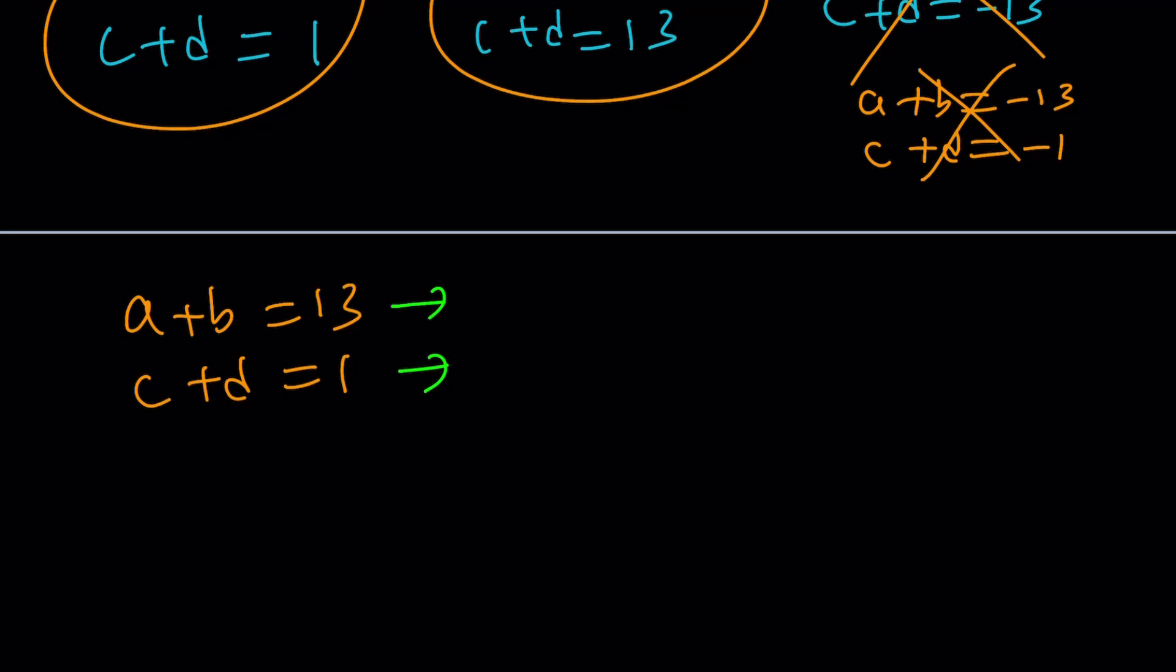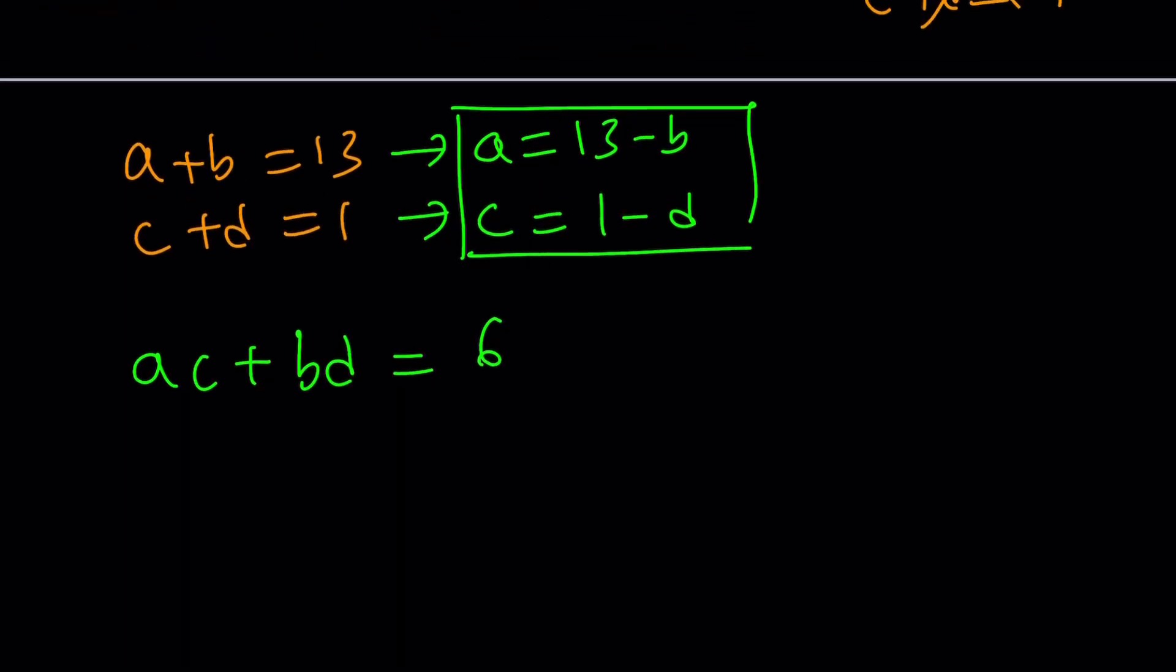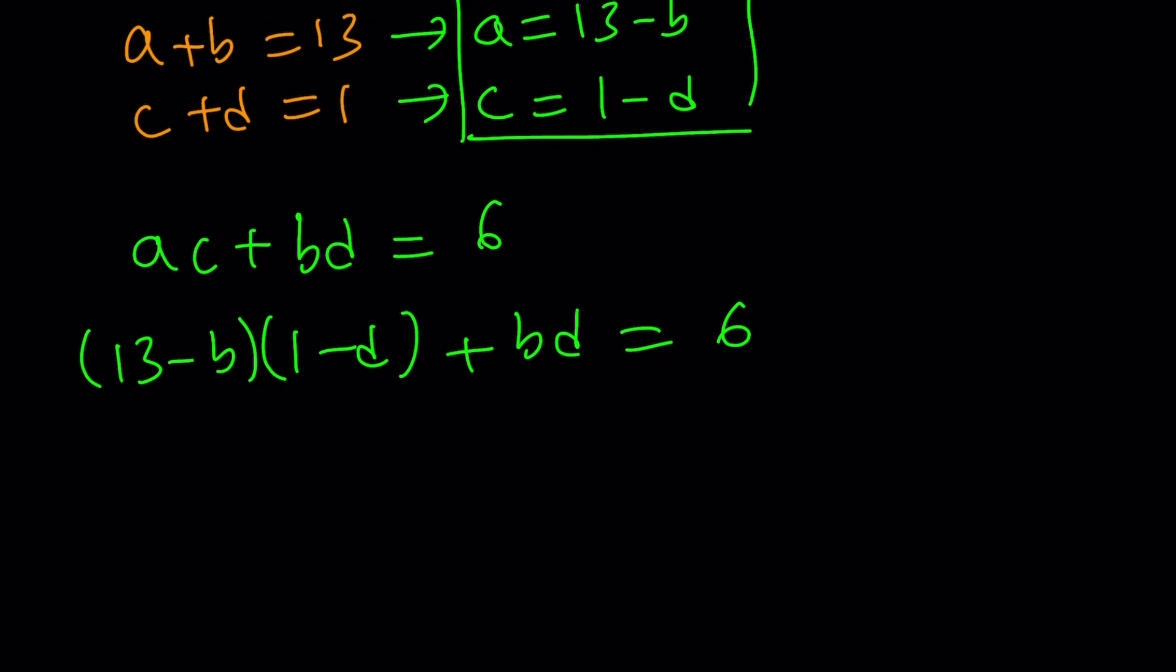We're going to use an awesome method, which I use very frequently, and it is called substitution. If you said substitution, you guessed it right. So, here's what I'm going to do. I'm going to replace A with 13 - B, and C with 1 - D. And then, plug these into one of the equations. Which one? Doesn't matter. I'm going to use the first one, because I like it better. And guess what? This is going to give us another equation in two variables, but this time, it's going to be real cool. You'll see in a little bit why.